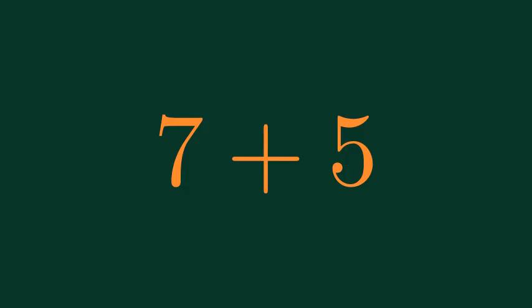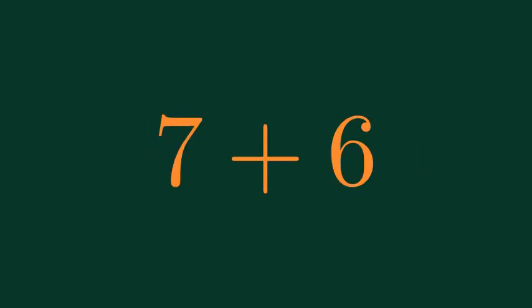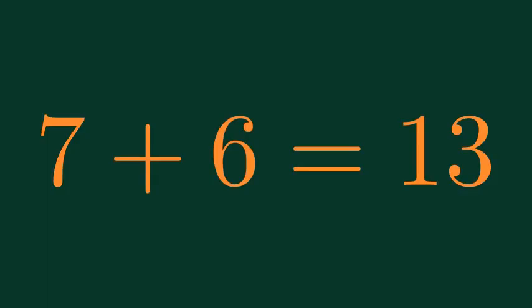What is 7 plus 5? 7 plus 5 is equal to 12. What is 7 plus 6? 7 plus 6 is equal to 13.